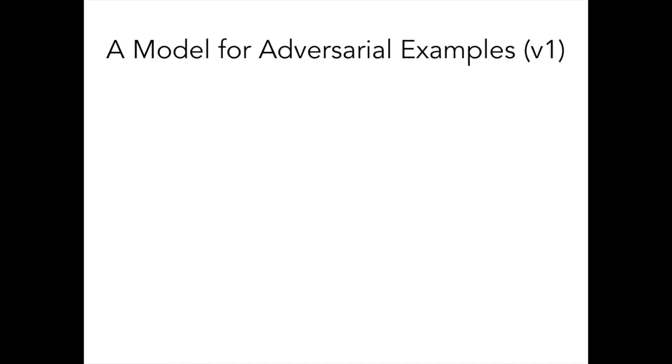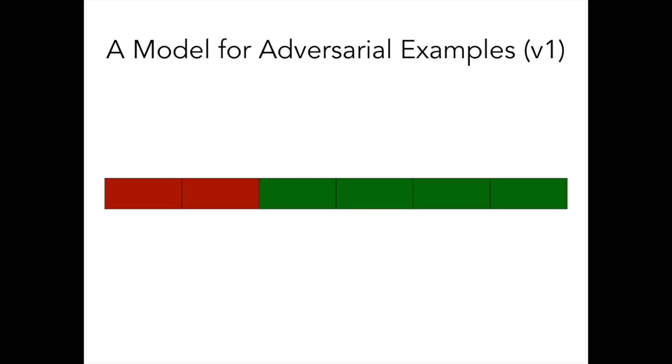One way that adversarial examples could arise is if our classifiers are unreasonably sensitive to useless patterns in the input. Pictorially, suppose we think of our inputs as a collection of features. Here we have some useful features that the classifier is supposed to learn to do well on the classification task.